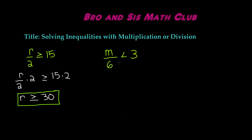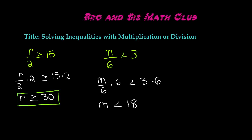Now let's solve our second inequality, which is m divided by 6 is less than 3. Once again, m is being divided by 6, so we have to multiply. So m divided by 6 times 6 is less than 3 times 6. The 6s cancel each other out, and we are left with m is less than 3 times 6, which is 18.